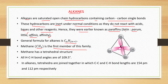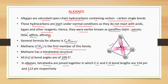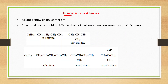Methane CH4 is the first member of this family. Methane has a tetrahedral structure — all hydrogen-carbon-hydrogen bond angles are 109.5 degrees. In alkanes, tetrahedra are joined together in which carbon-carbon and carbon-hydrogen bond lengths are 154 picometers and 112 picometers respectively.